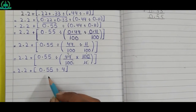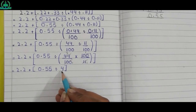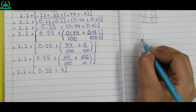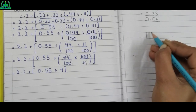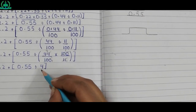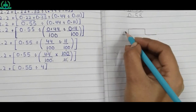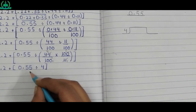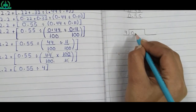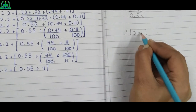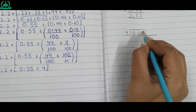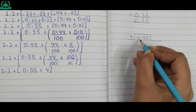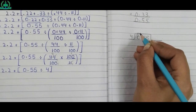0.55 divided by 4 — rough work. We put 4 in divisor place and 0.55 in dividend place. We shift the decimal from dividend place to quotient place.